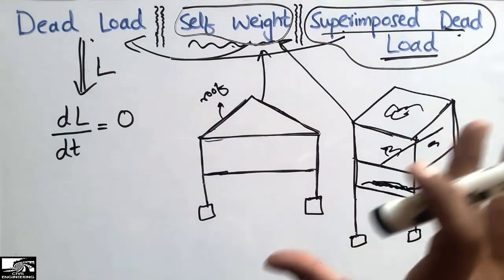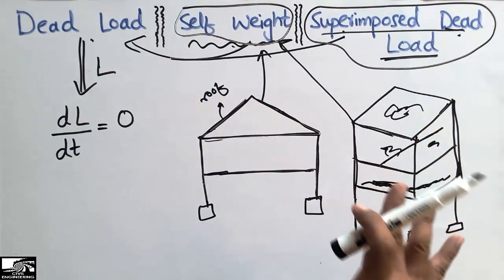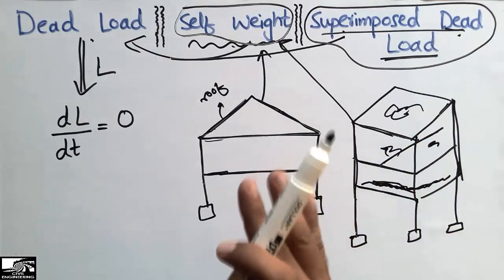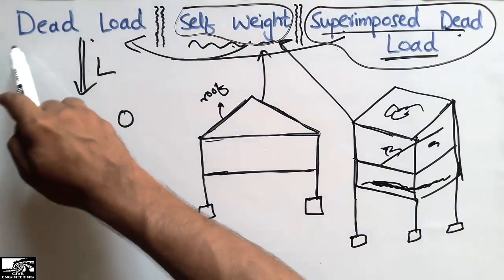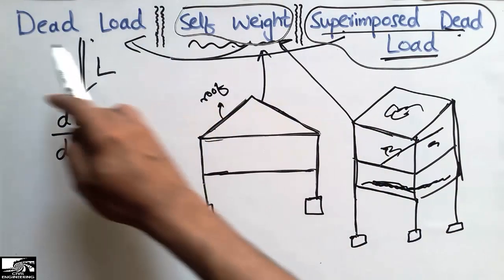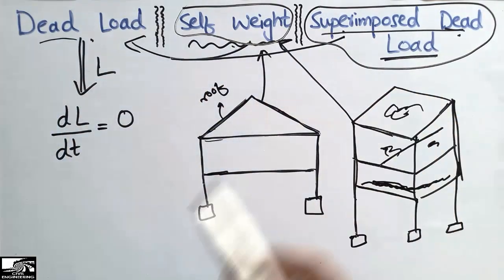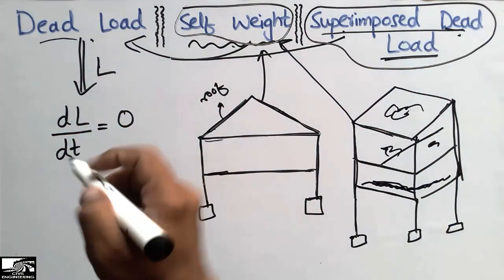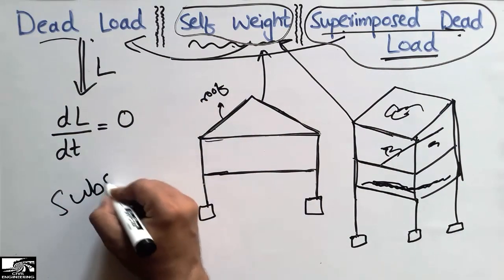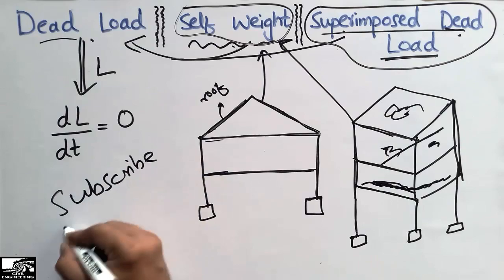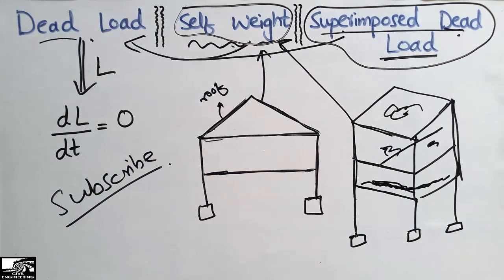The self weight is the weight of the structure itself, and the dead load is the total weight which is not going to change with time. I hope you guys understand the main difference between these three terms: dead load, self weight, and superimposed dead load. Don't forget to subscribe to my channel for daily updates. Thank you for watching.